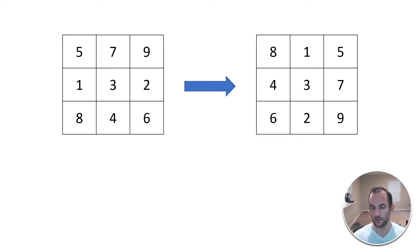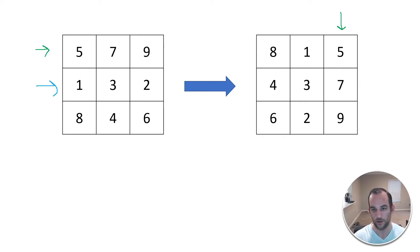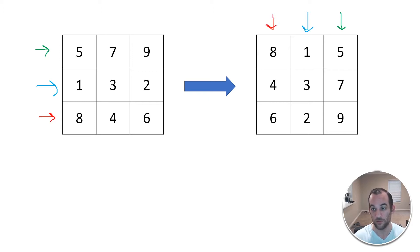In the first row we have, say, 5, 7, 9. Those three cells correspond to the last column after rotating 90 degrees. So it looks like the first row becomes the last column. The second row becomes the middle column, and the last row in the original matrix becomes the first column in the rotated matrix.